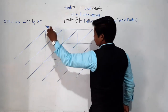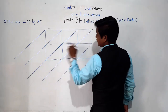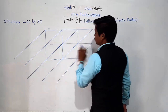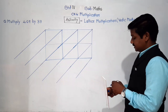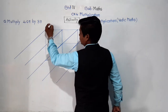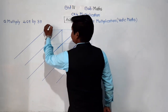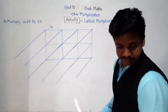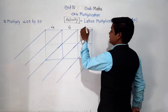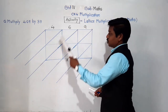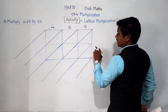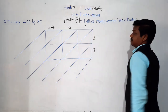First we drew this chart with two rows and three columns — three columns for the three-digit number and two rows for the two-digit number. Now we write each digit of the three-digit number above each column: 4 in the first column, 6 in the second, and 9 in the third. Along the rows horizontally, we write 3 and 7.